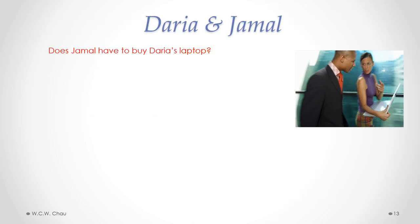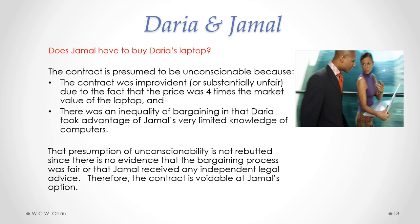Since Daria is obviously trying to rip off Jamal, does Jamal have to buy Daria's laptop? The contract is presumed to be unconscionable because the contract was improvident — the price was four times the market value of the laptop, $2,000 versus $500 — and there was an inequality of bargaining power in that Daria took advantage of Jamal's very limited knowledge of computers. That presumption of unconscionability is not rebutted since there is no evidence the bargaining process was fair or that Jamal received any independent legal advice. Therefore, the contract is voidable at Jamal's option.